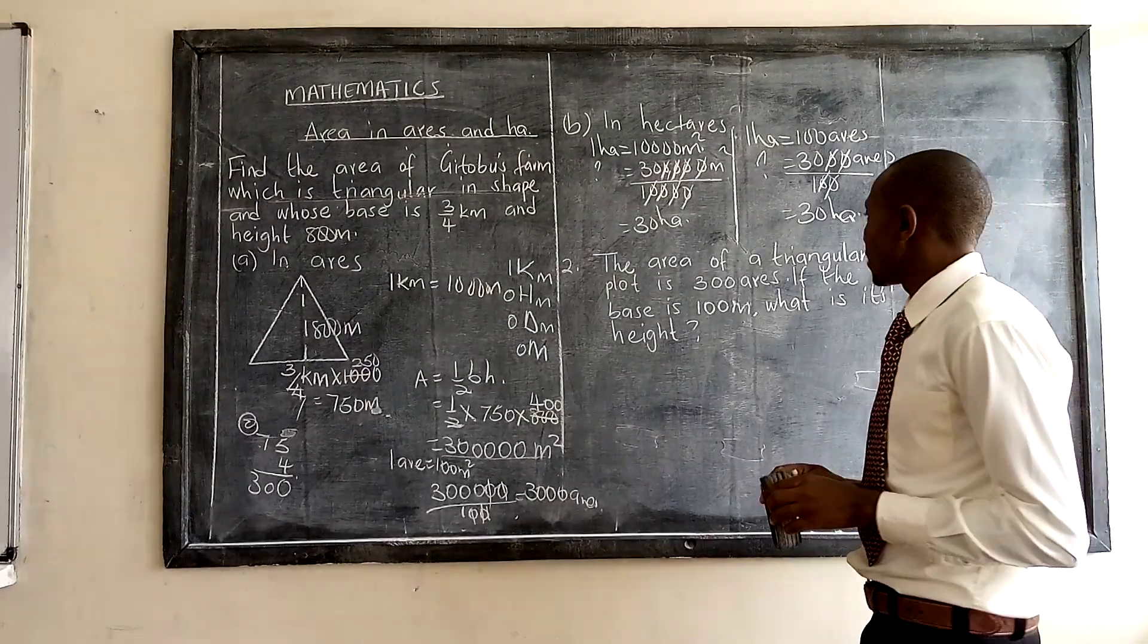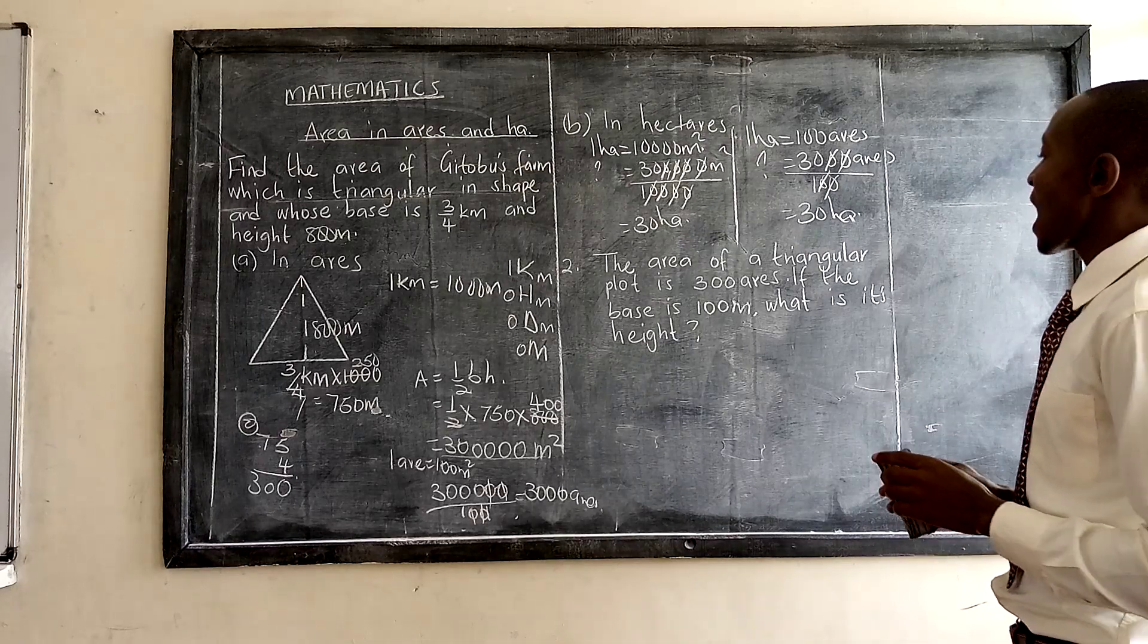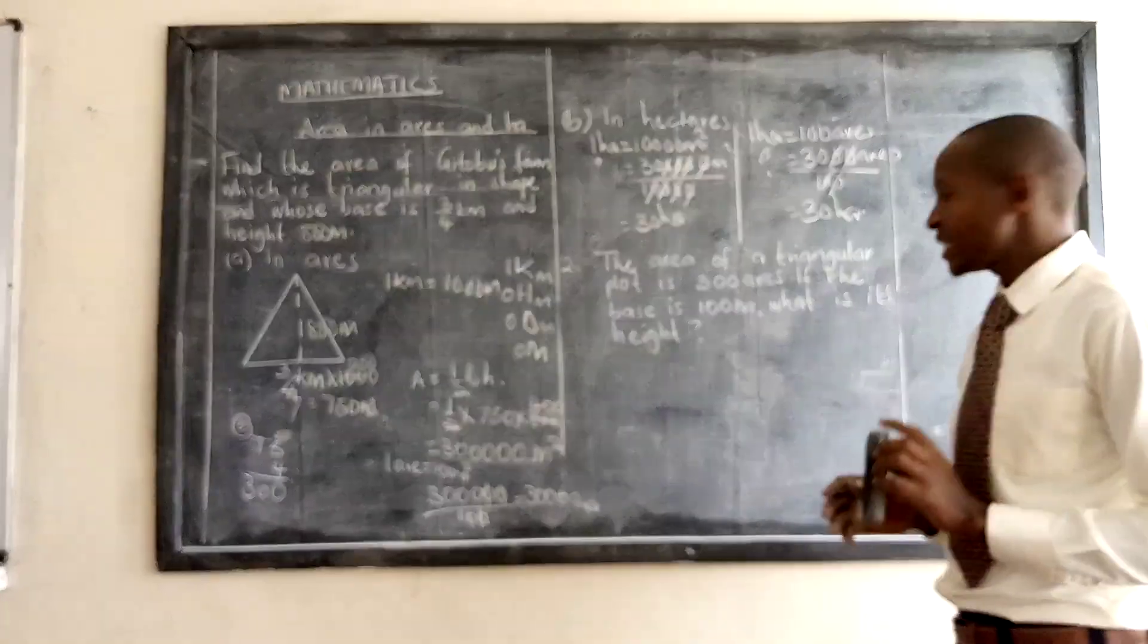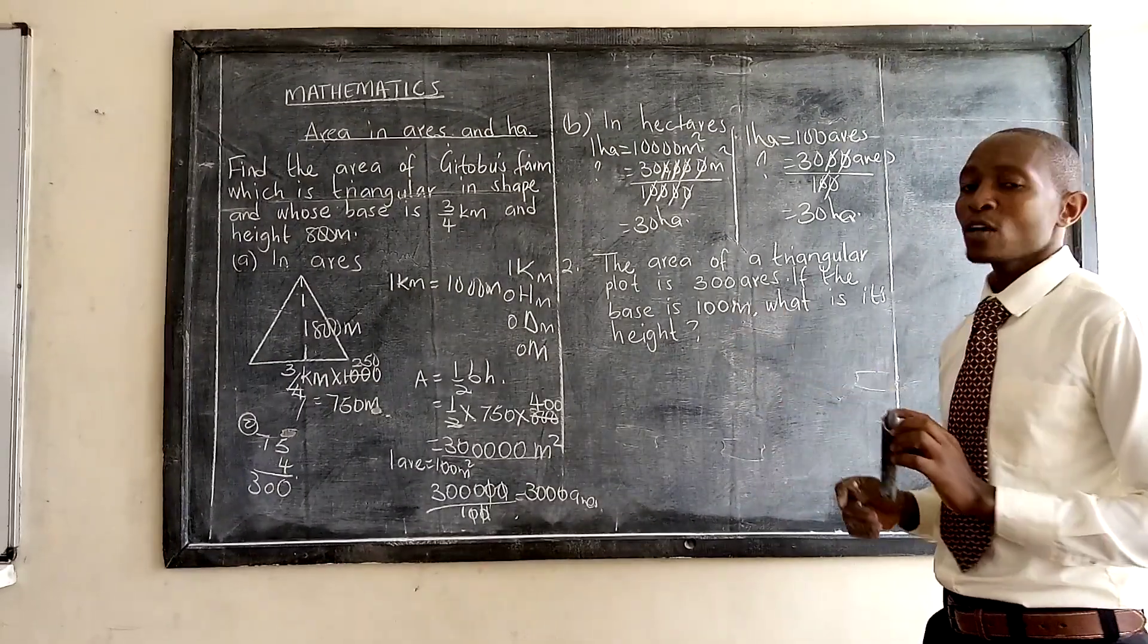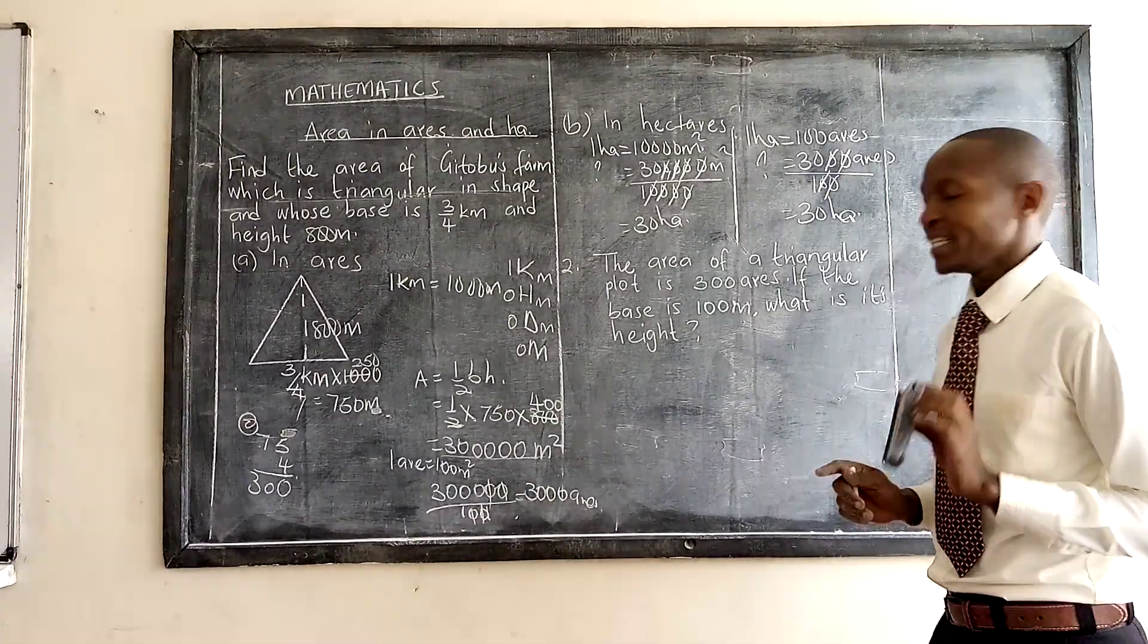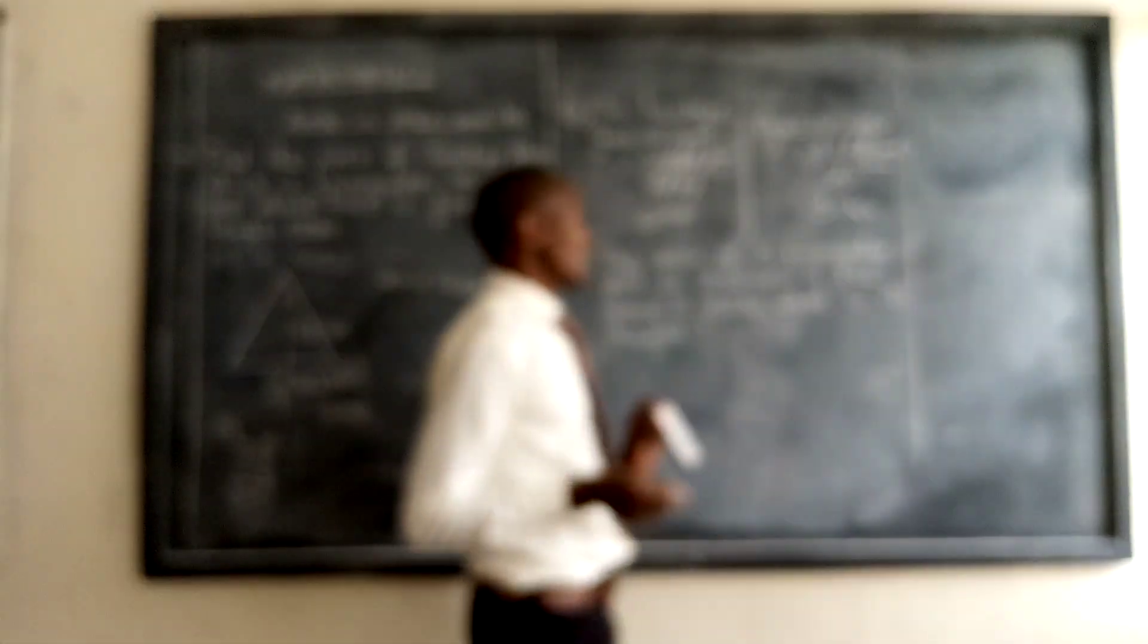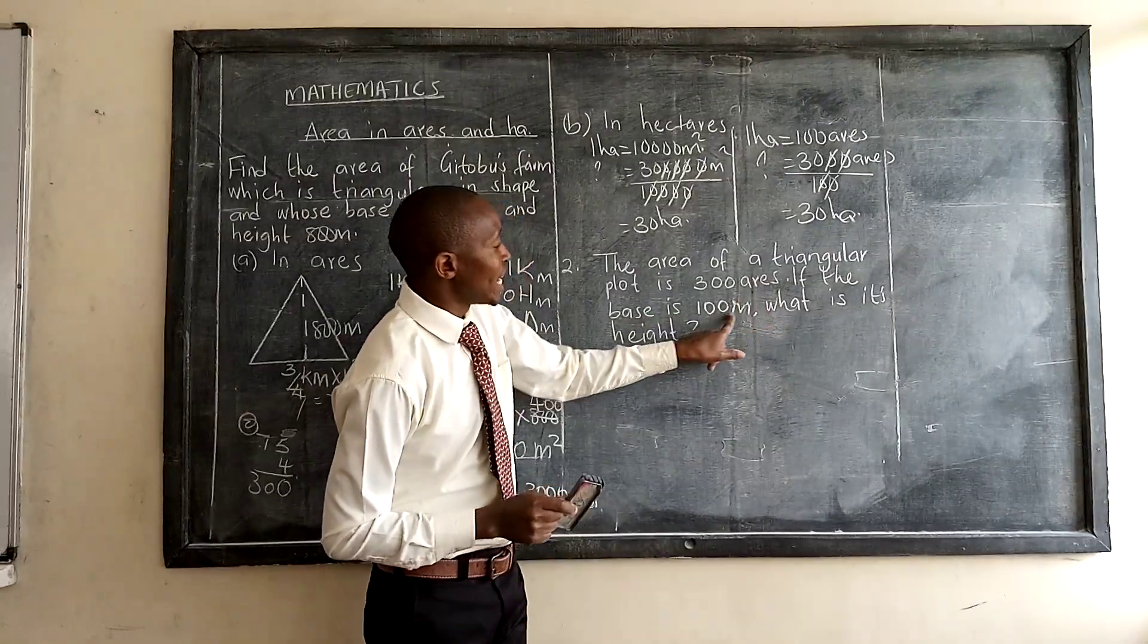The area of a triangular plot is 300 airs. If the base is 100 meters, what is its height? In this case, we have the area, but then we don't have the height. How do you get the height? Remember, these are airs and these are meters.